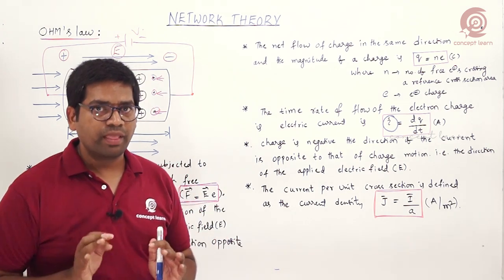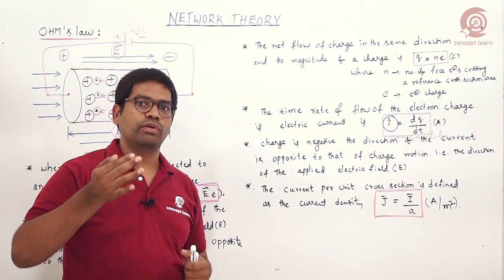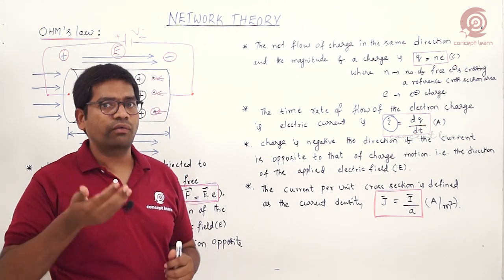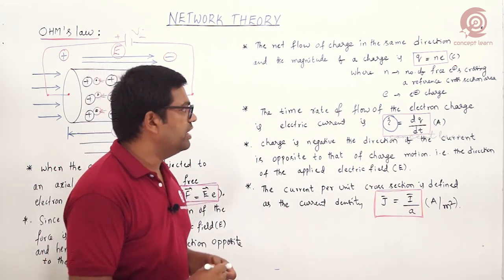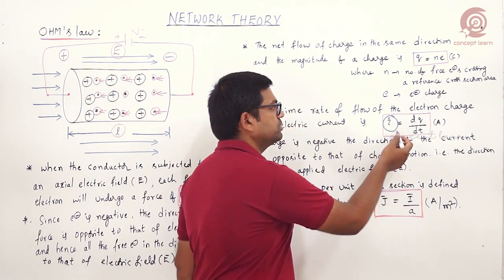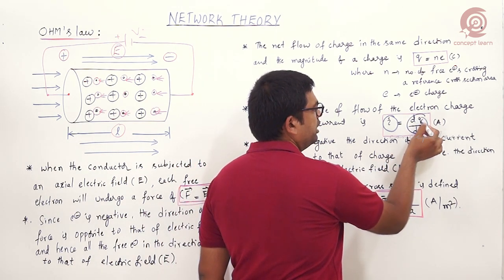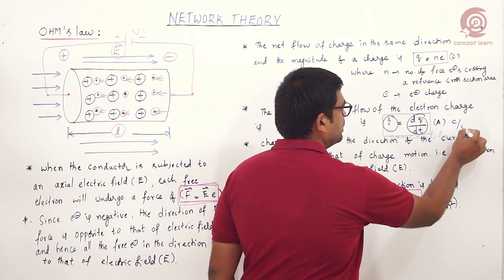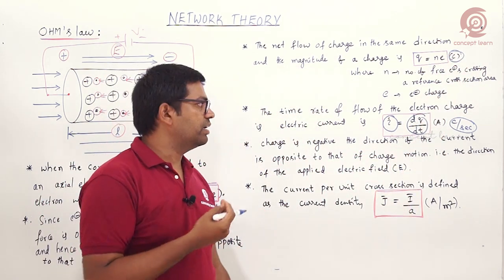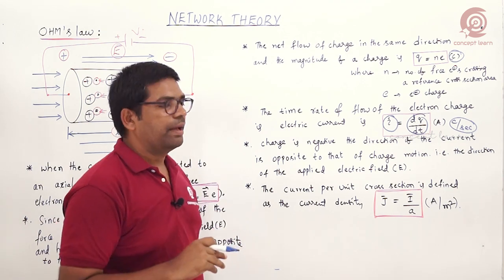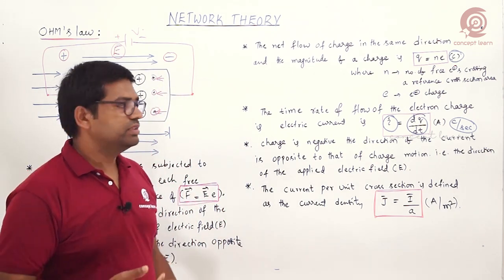Current, or intensity of electricity, is defined as the rate of flow of charge. Mathematically, I = dq/dt. The unit is amperes, and based on this relation, another unit is coulombs per second, since the charge unit is coulombs.